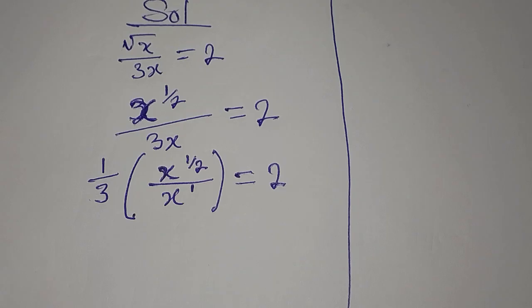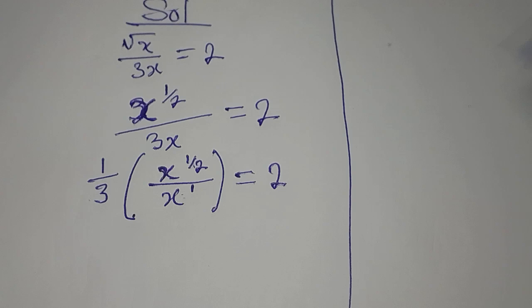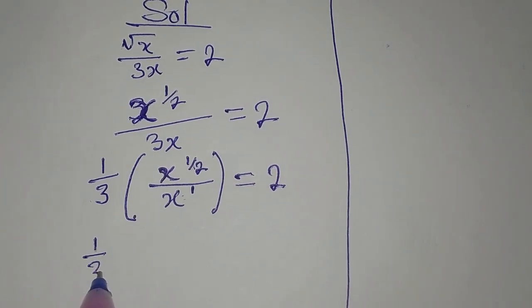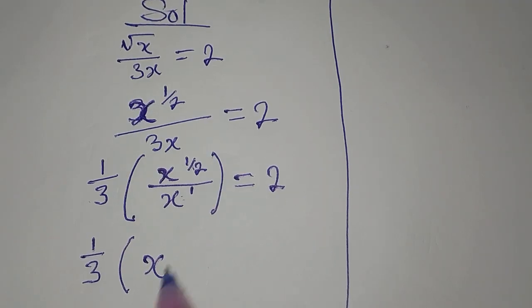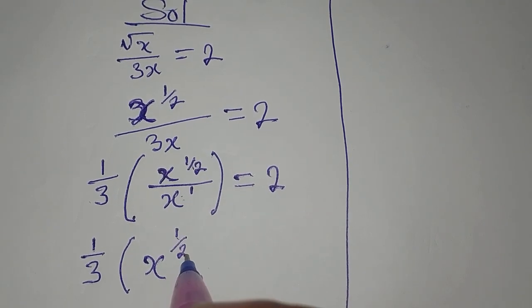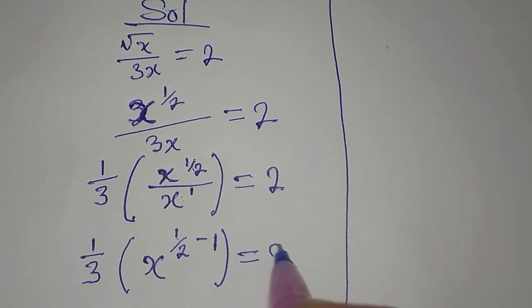The next thing I will do is apply one of the laws of indices here, so that 1/3 is going to multiply one of the bases, x. Then we have 1/2 minus 1. This is still equal to 2.